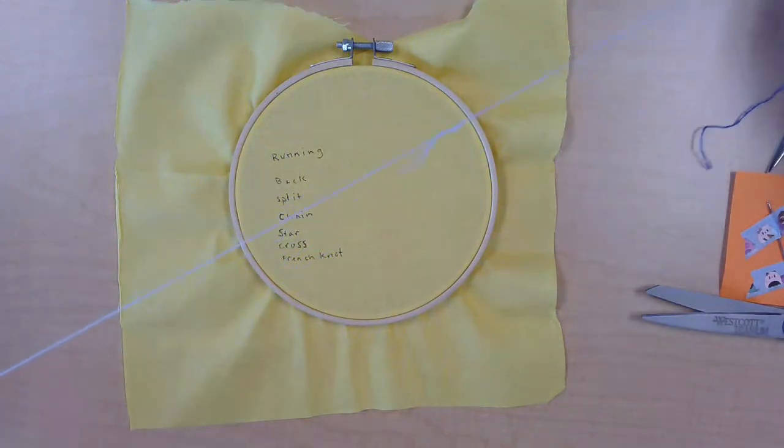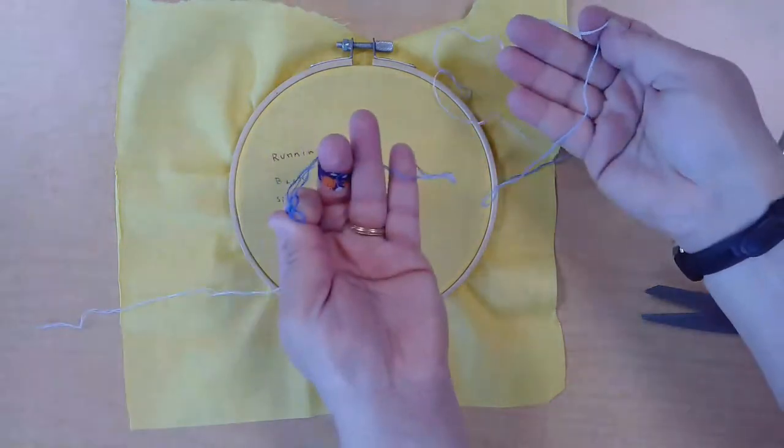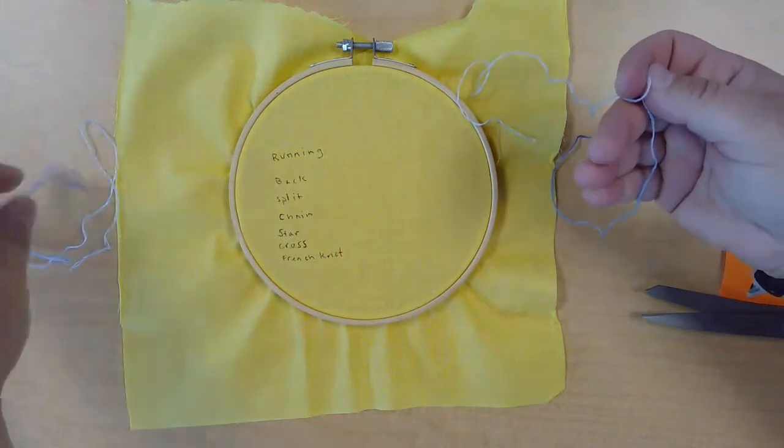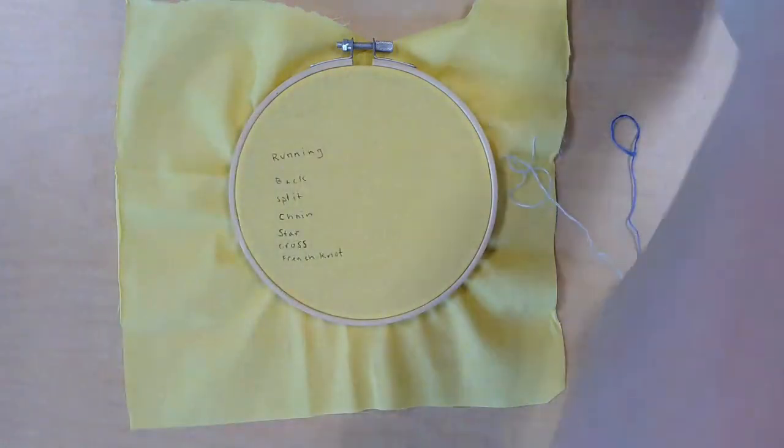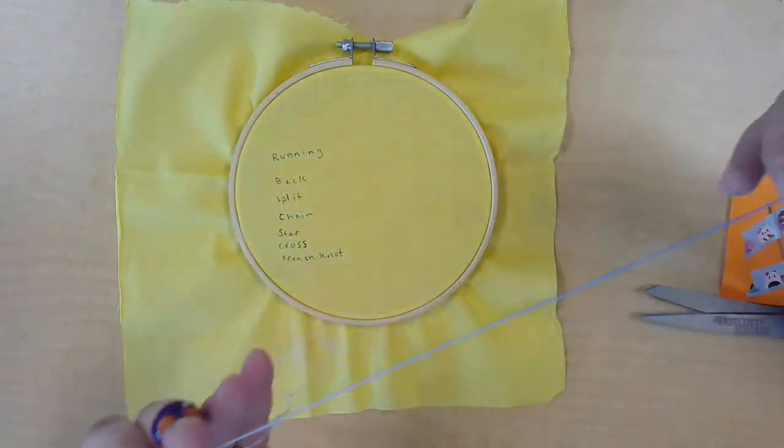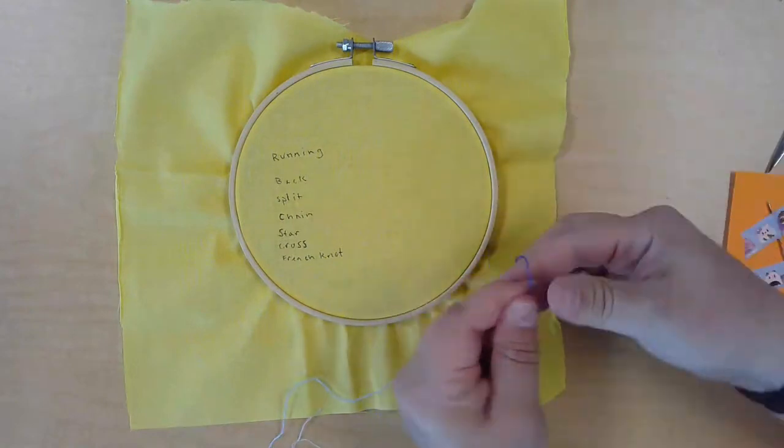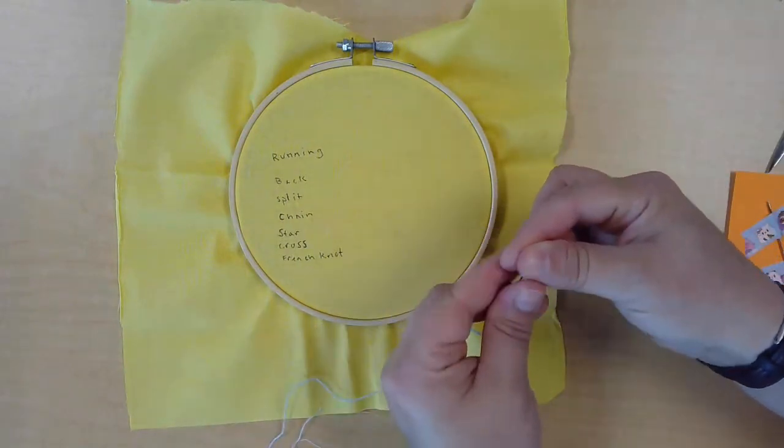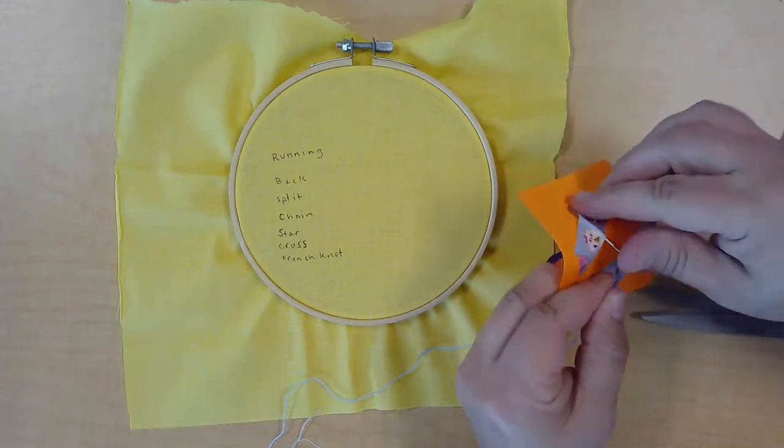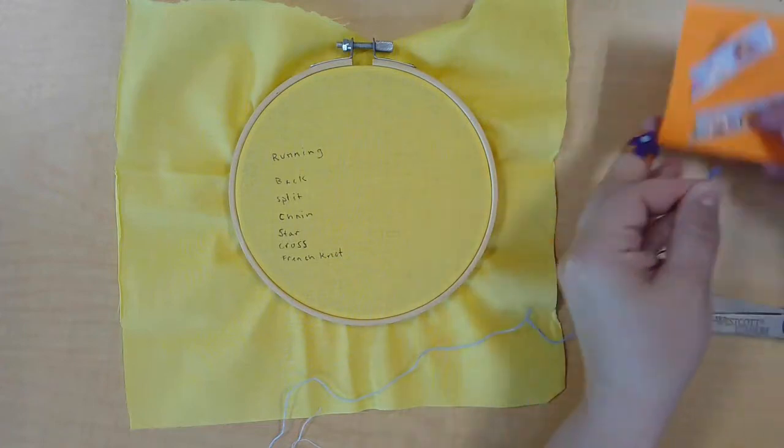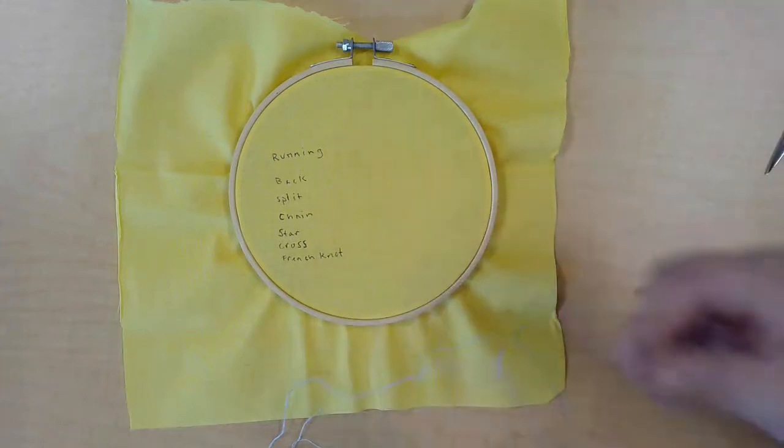And then once you have it separated, you'll have two similar strands of floss. You can put one aside for later, and then you can work on actually threading your needle. That's what we'll do next.